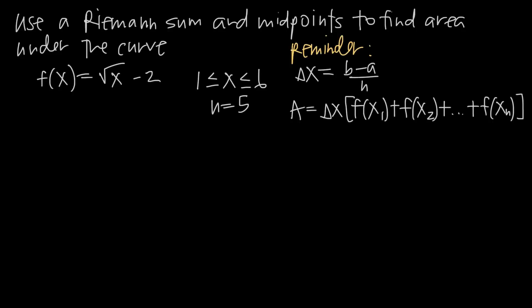In this video, we're talking about how to use a Riemann sum with midpoints to approximate the area under the curve. Riemann sums is a technique you can use to approximate area before we learn how to use the integral or the antiderivative to find exact area. So like trapezoidal rule and Simpson's rule, this is going to be an approximation method.